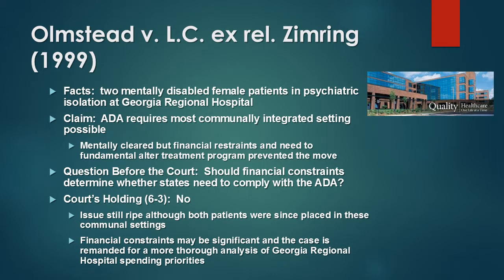The court also acknowledged that financial constraints may be significant, and on that issue decided to remand the case — send it back down — for a more thorough analysis of Georgia Regional Hospital's spending priorities, to examine what the hospital was actually paying for if it couldn't shift two patients from isolation to an integrated communal setting.